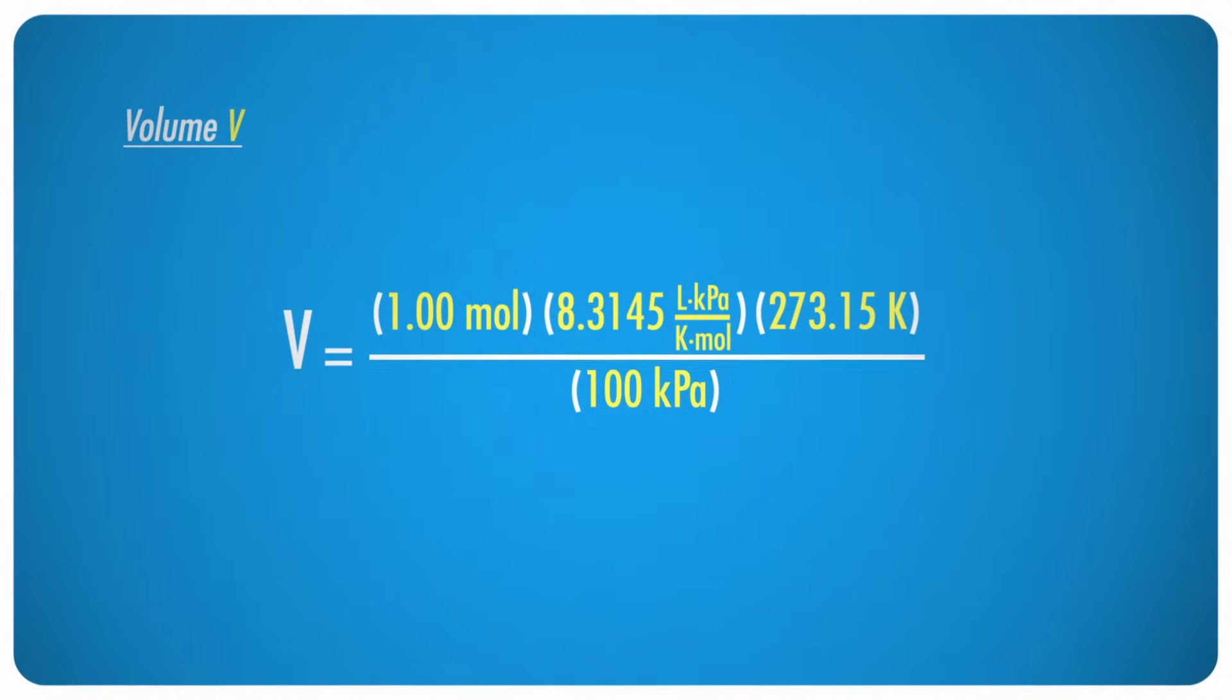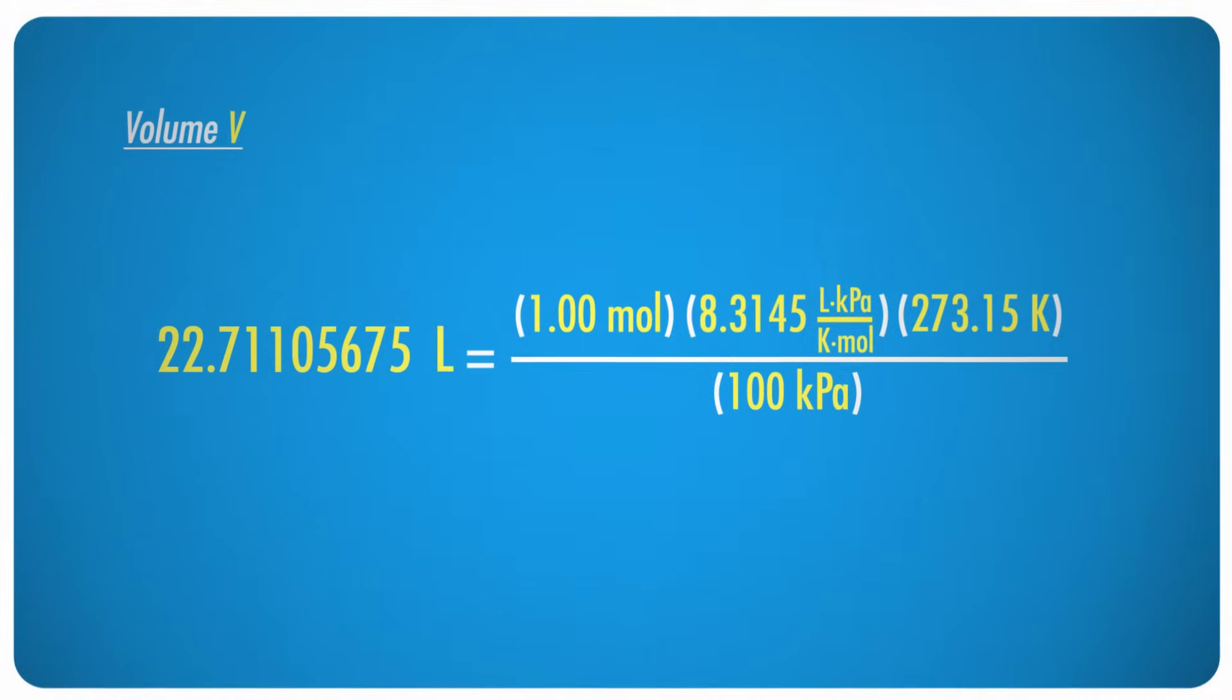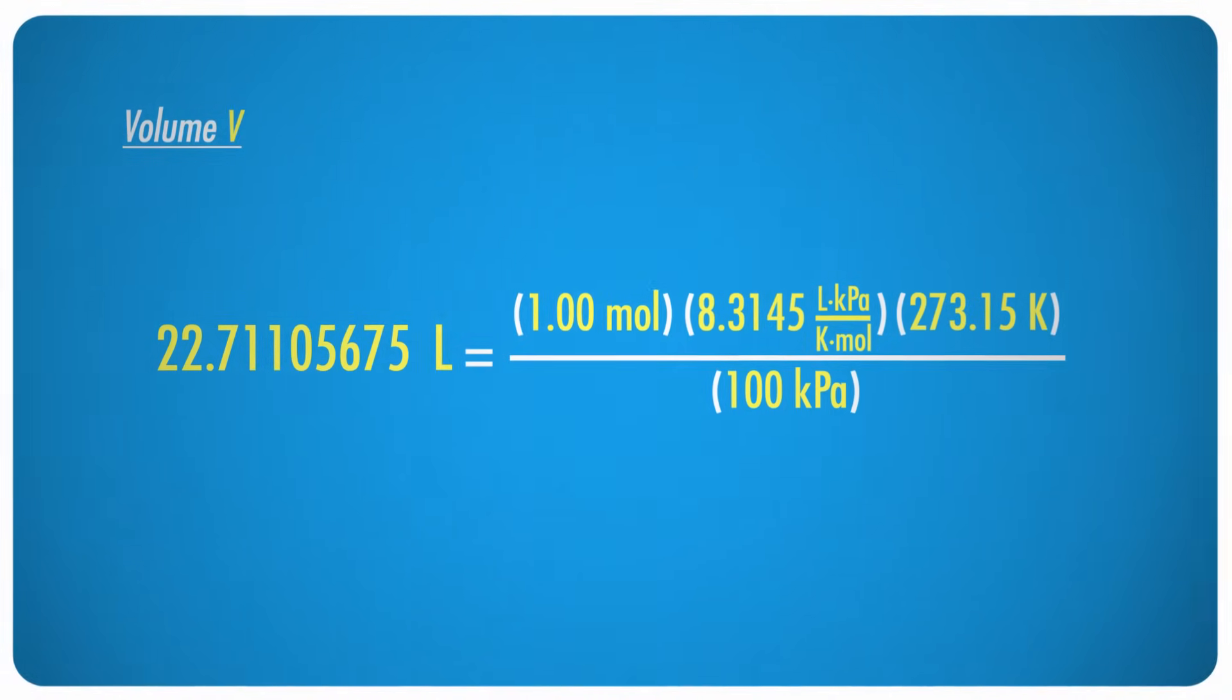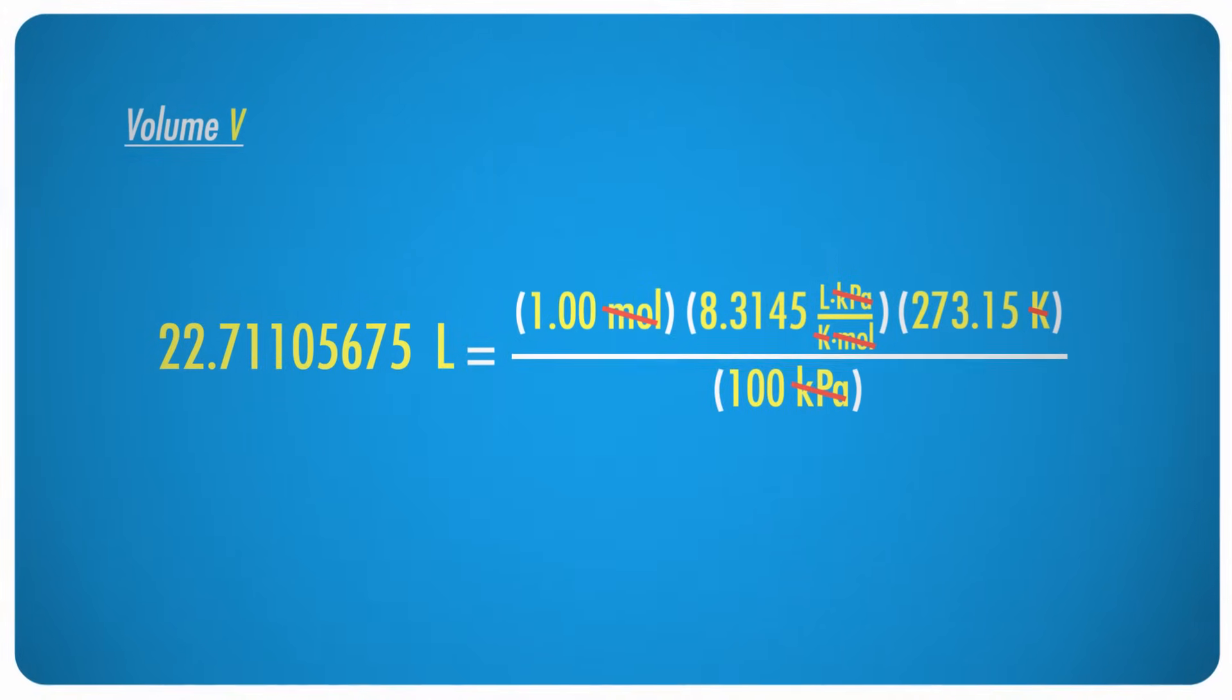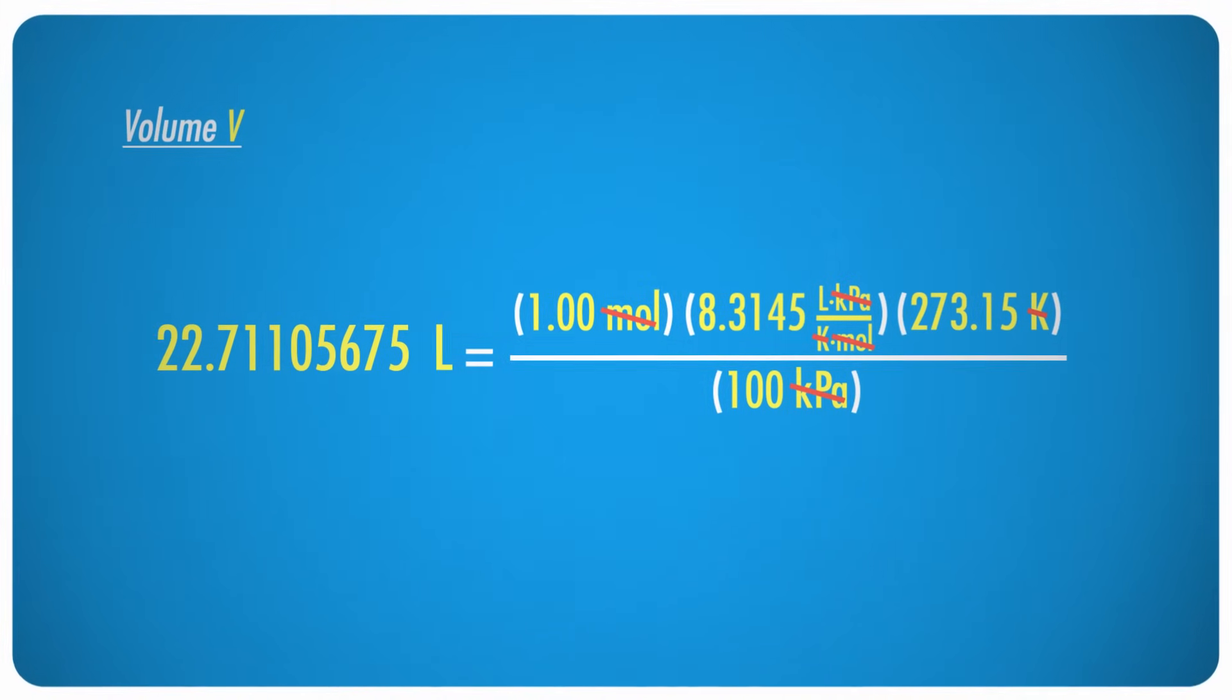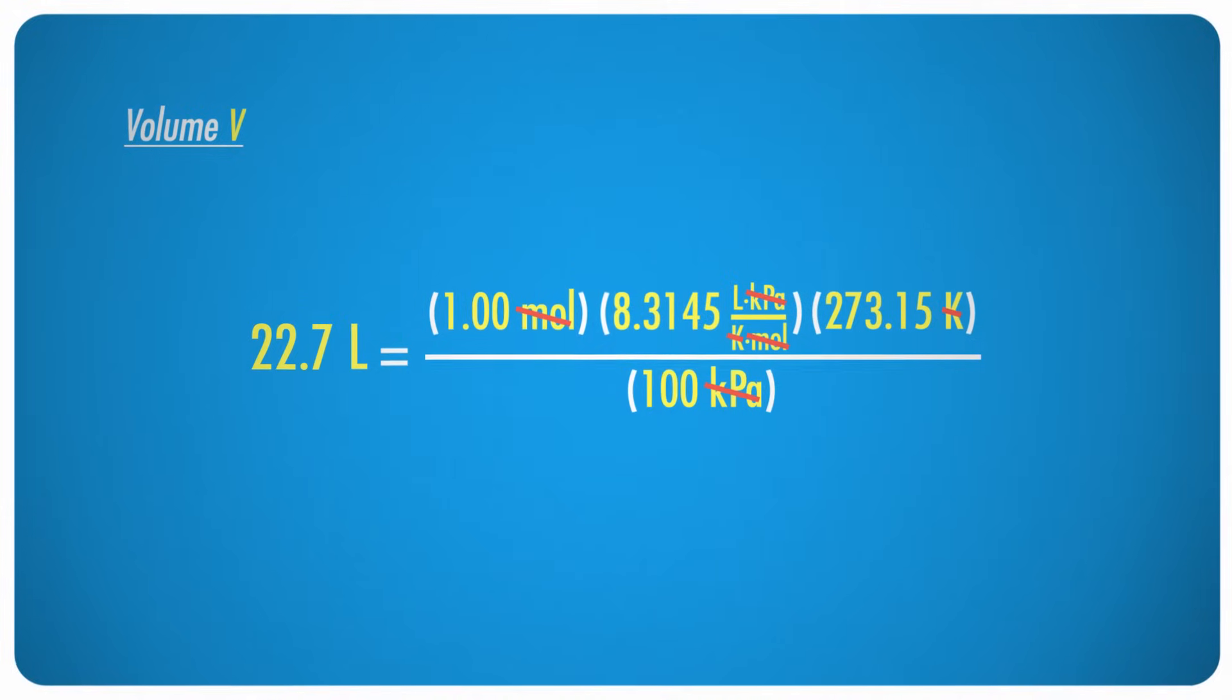By doing the math, I'm doing it in my imaginary calculator here, we find that the volume equals 22.71105675. And because of the big scary looking unit on R, the kilopascals, moles, and kelvins all cancel out, leaving us with liters, which is exactly what you'd expect for a volume unit. This confirms that the problem was set up correctly, so that's nice. Rounding our answer to the correct number of significant digits and adding the unit gives a final answer of 22.7 liters per 1.00 mole of gas.